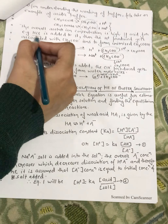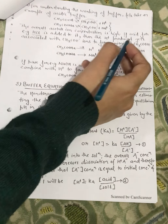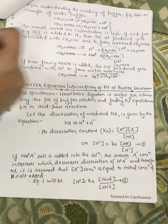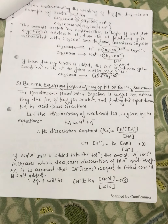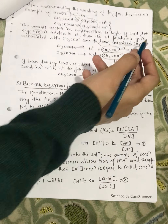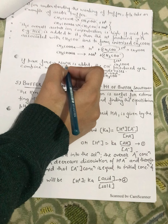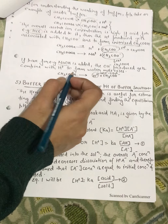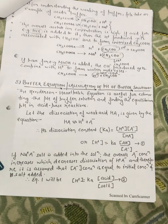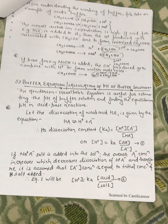If an acid such as HCl is added, the H-plus ions produced get associated with acetate ions to form unionized acetic acid. If a base such as NaOH is added, the OH hydroxyl ions produced get combined with H-plus ions to form water molecules. This is the working condition of the buffer.